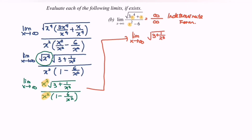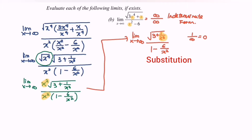For your information, 1 over infinity equals 0. So substituting infinity: 1 over x cubed becomes 0, giving square root of 3 for the numerator. Similarly, 6 over x squared becomes 0 for the denominator term, leaving 1 for the denominator.